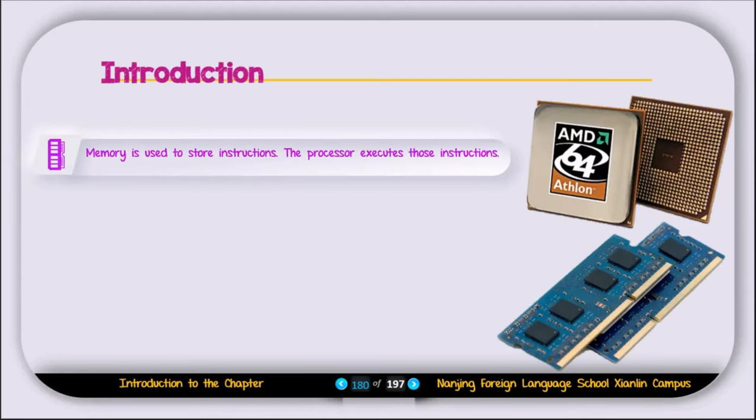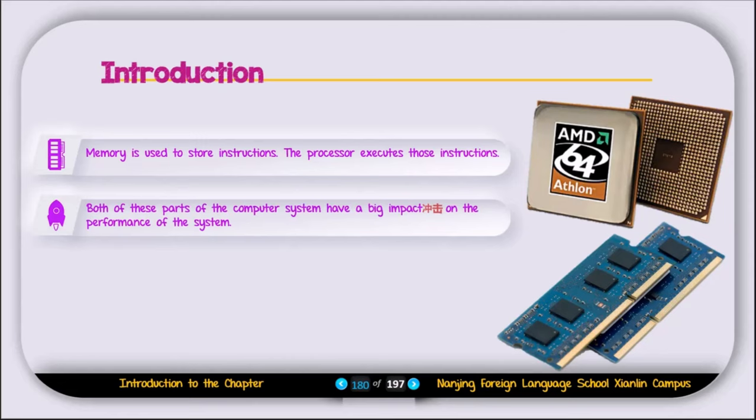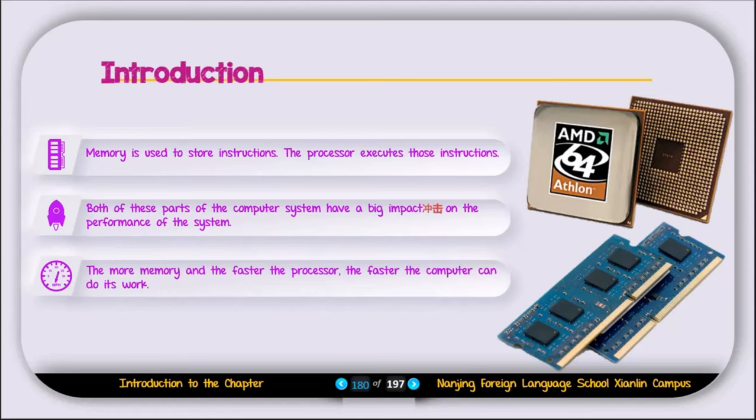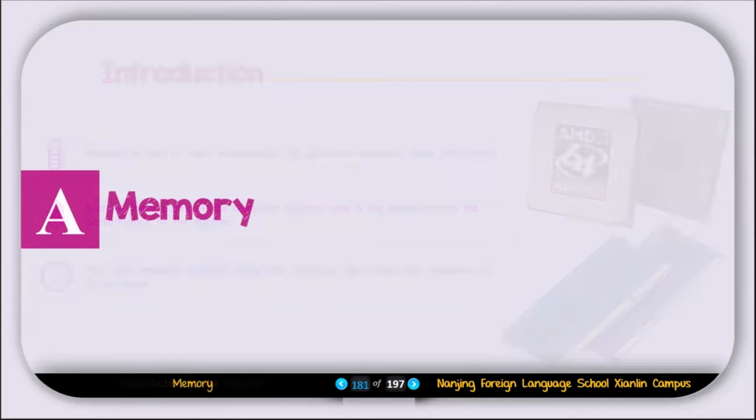Memory is used to store instructions, and the processor executes those instructions. Both of these parts of a computer system have a big impact on performance. The more memory and the faster the processor, the faster the computer can do its work. Now let's discuss memory.